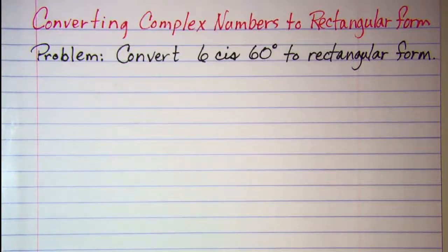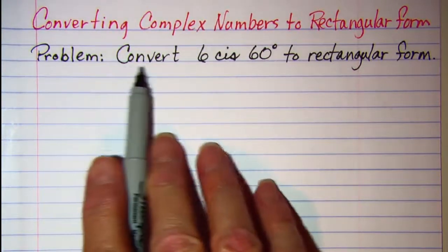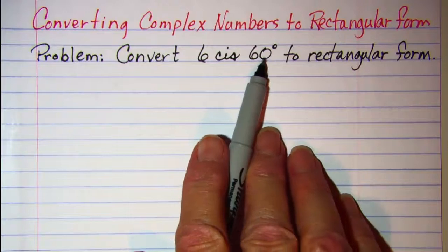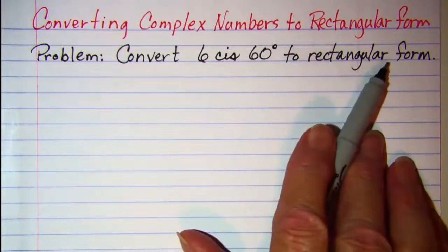In this video we will be converting complex numbers to rectangular form. Our problem is to convert 6 cis 60 degrees to rectangular form.